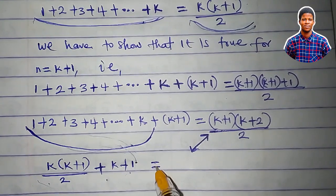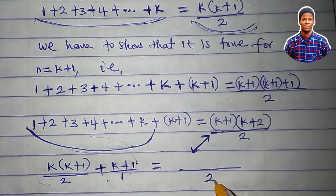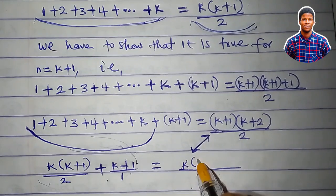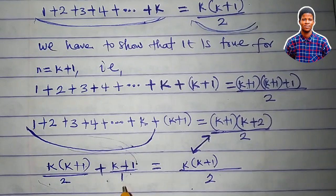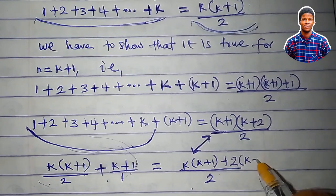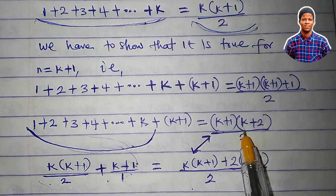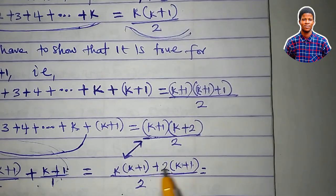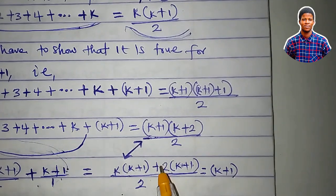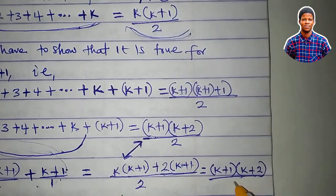Let's simplify now. By LCM, this is over 1, and the LCM is 2. 2 into 2 is 1; 1 times k times k plus 1 gives k times k plus 1. 2 divided by 1 is 2, so 2 times k plus 1. That gives us k times k plus 1 plus 2 times k plus 1, all over 2. Remember, the goal is to simplify this to get the target expression. We can see that this expression can be factorized — pick one of the k plus 1, then k plus 2 outside will form another bracket, all over 2.